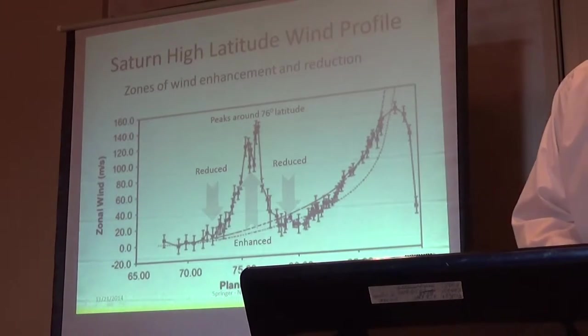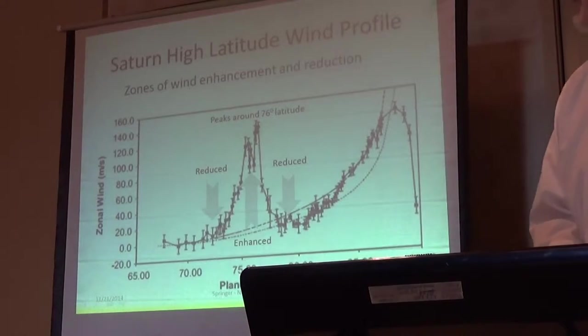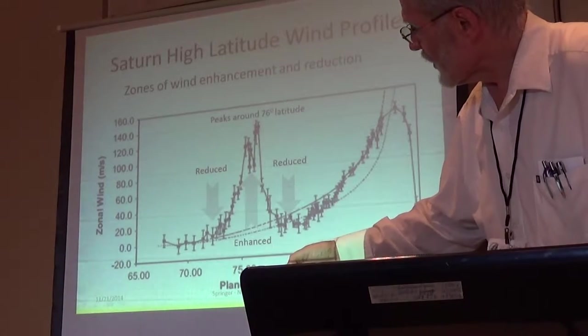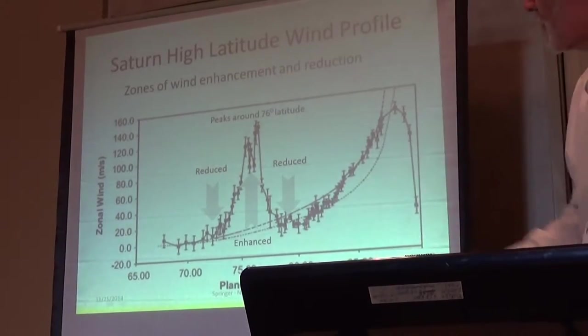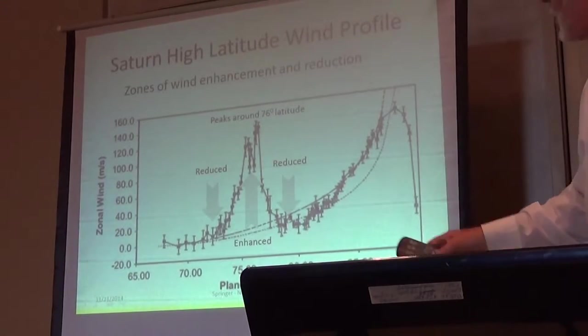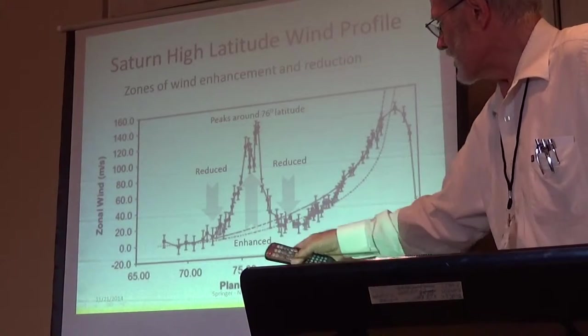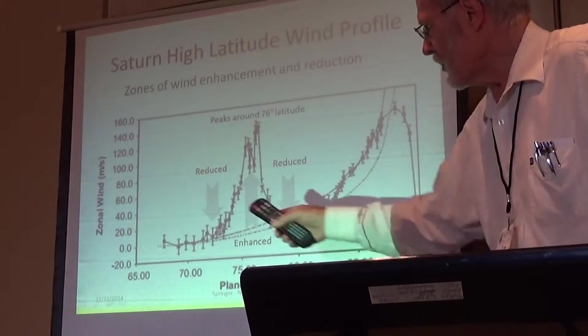And here's a cross-section showing the velocities. Velocities up to about 150 meters per second. And there's a peak at 76, and reduced areas about 2 degrees off the set.